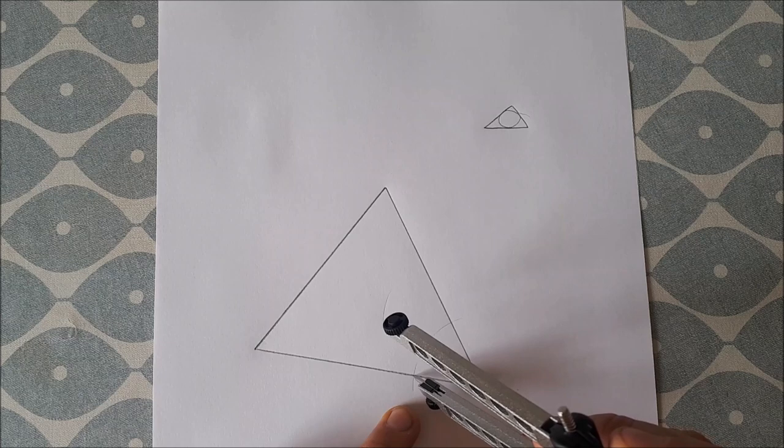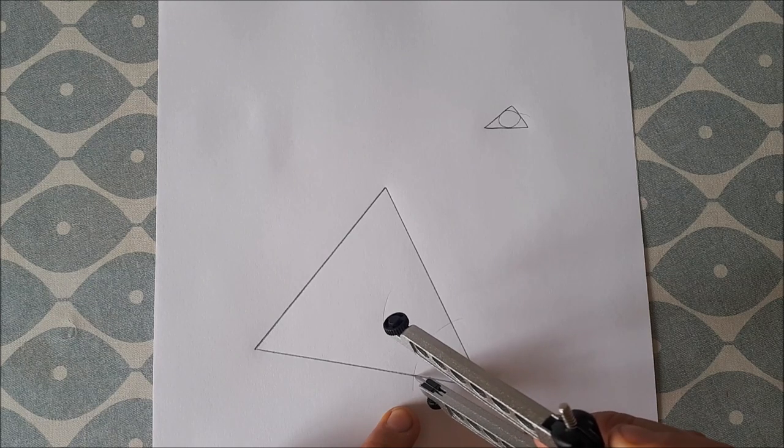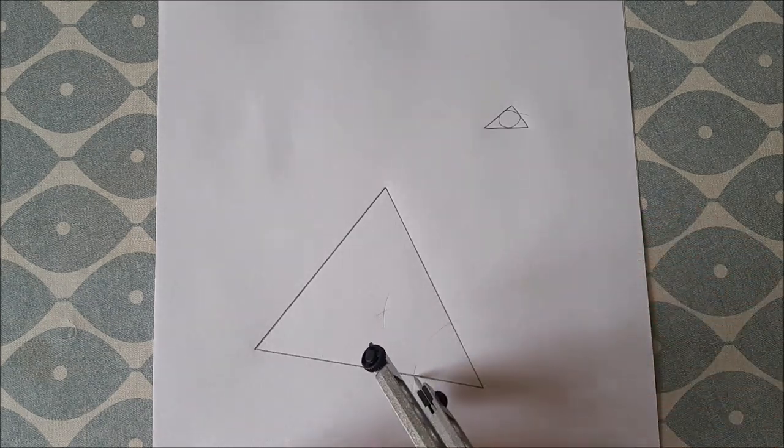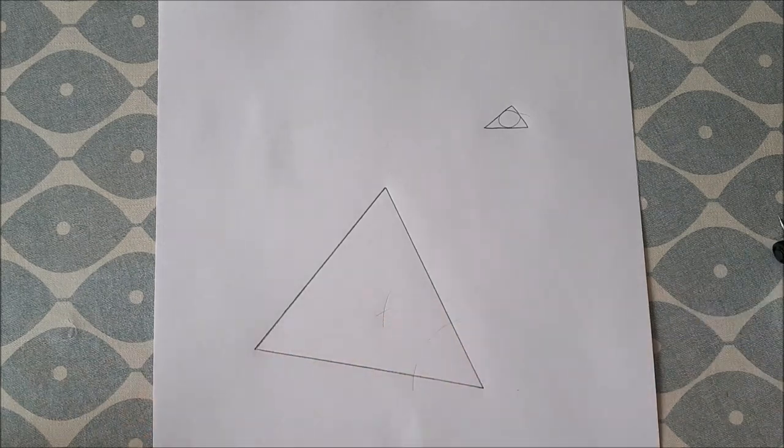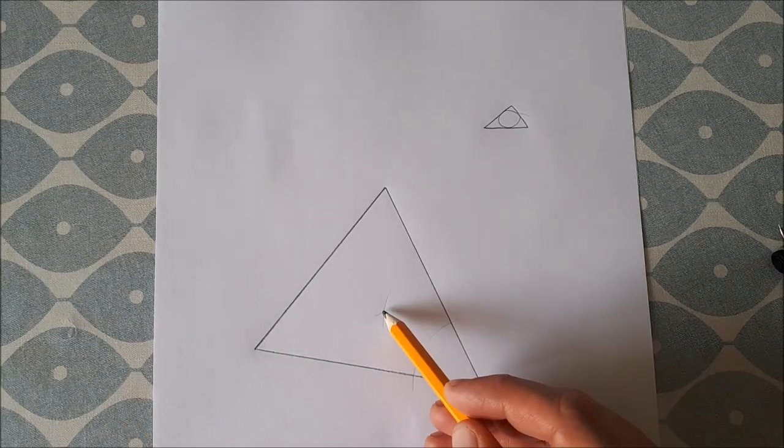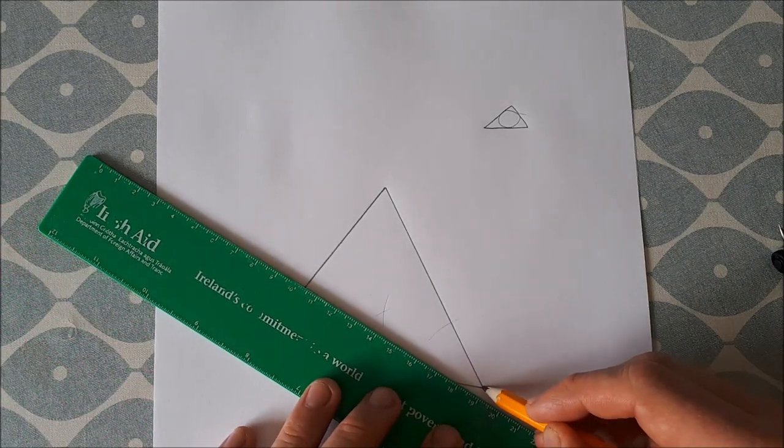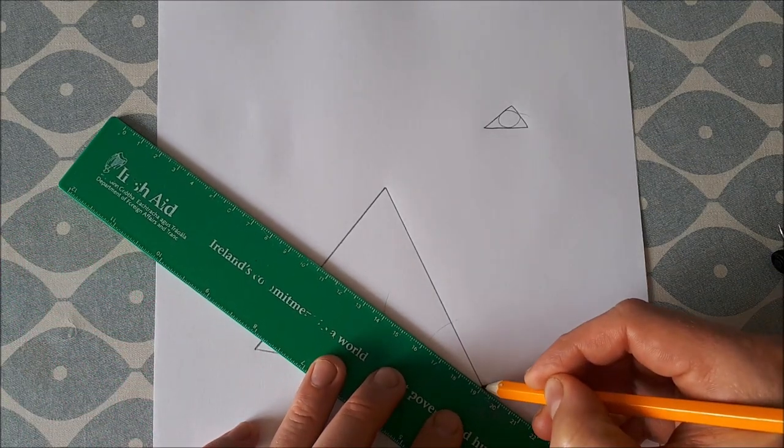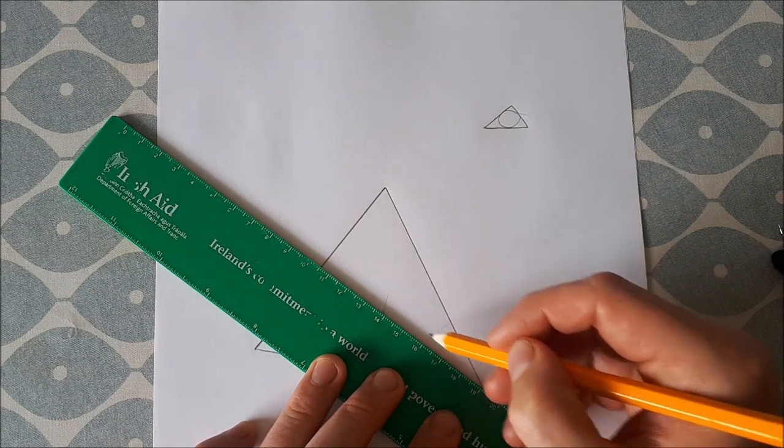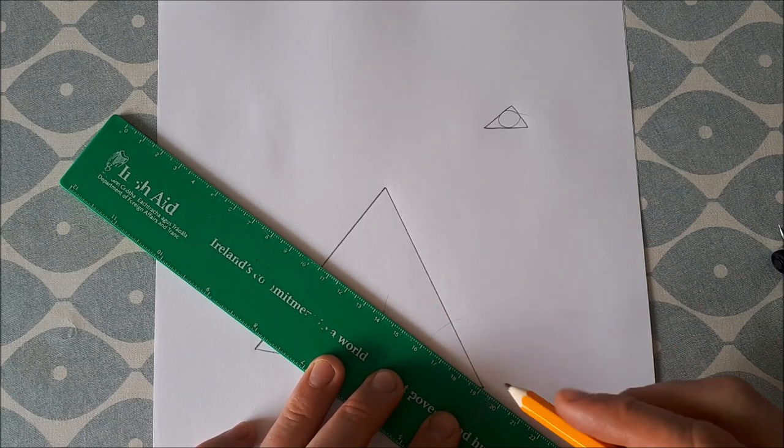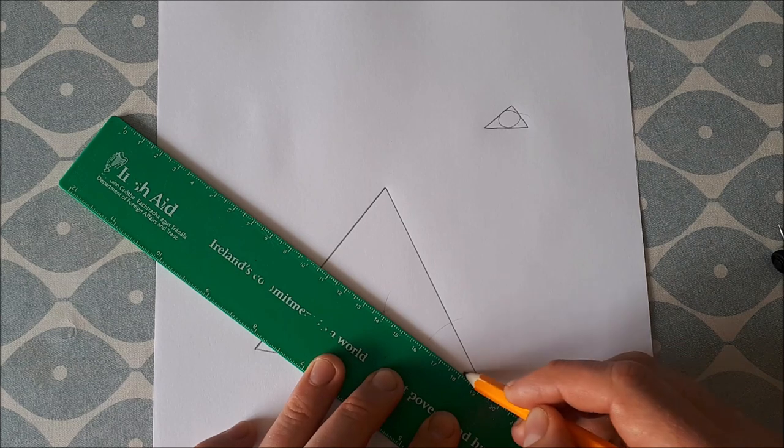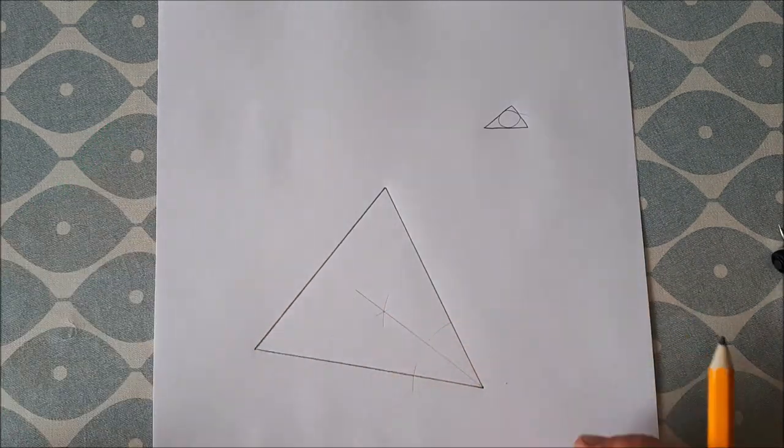Keeping the same distance on your compass, move it to the other point of intersection of the arc and the line and scribe an arc there. Now, if we join this point and our vertex, that angle is bisected. So that's one angle bisected.